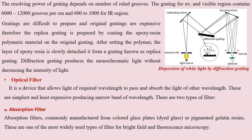The grating for UV and visible regions contains 6,000 to 12,000 grooves per centimeter, and for the IR region these are 600 to 1,000 grooves per centimeter. Generally these gratings are difficult to prepare and expensive. Therefore, a replica grating is prepared by coating an epoxy resin polymeric material on the original grating. After the polymer sets, the layer of epoxy resin is slowly detached and forms a replica grating. Diffraction gratings produce monochromatic light without decreasing the intensity, which is why they are commonly used.